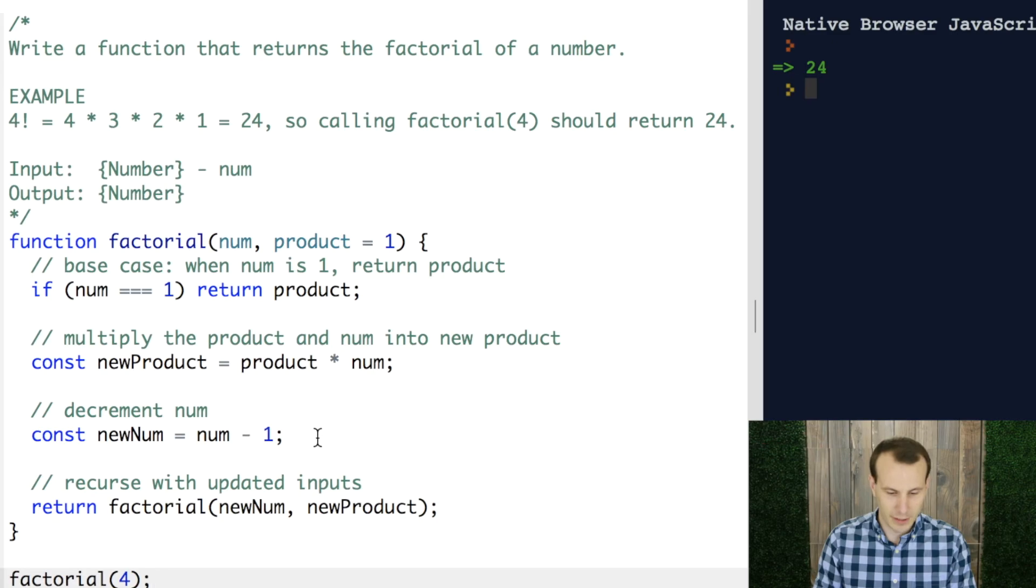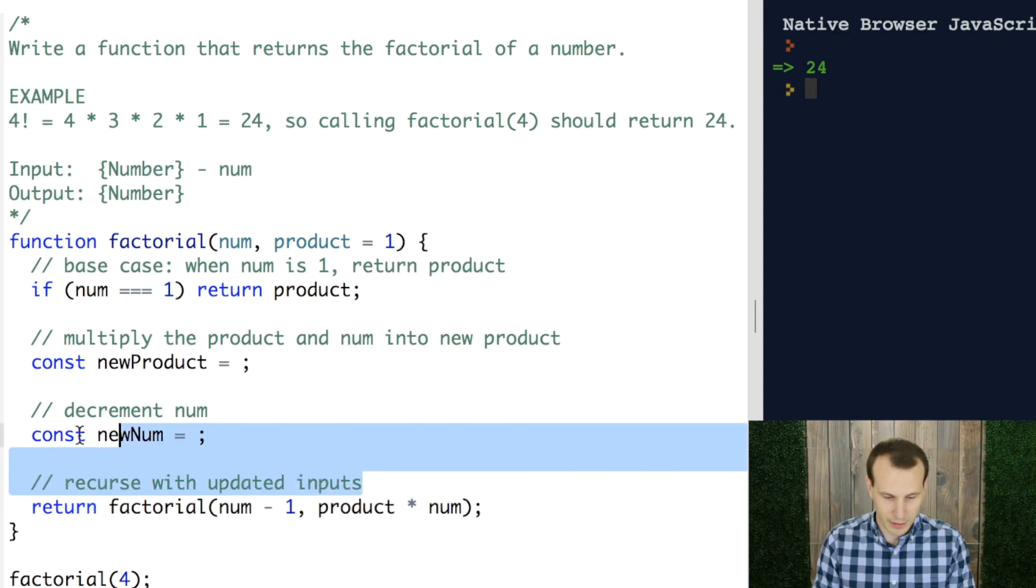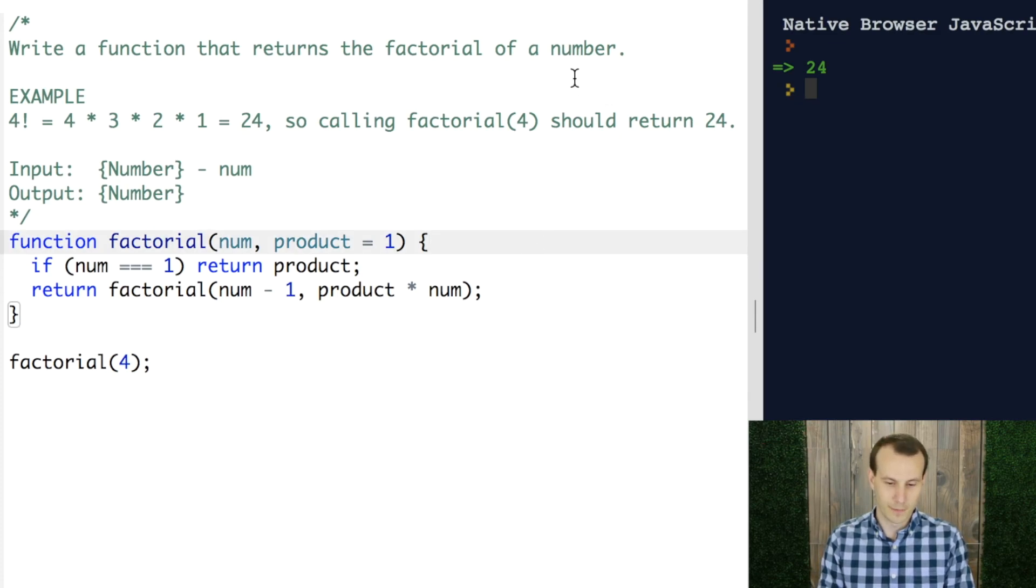So, we could, of course, clean this up. We could go ahead and simply insert this in right here. Since these variables are only really being used in one place, and they're just placeholders, we could go ahead and stick them straight into that next call. And right here, we see that in just two lines of code, we get the exact same output.